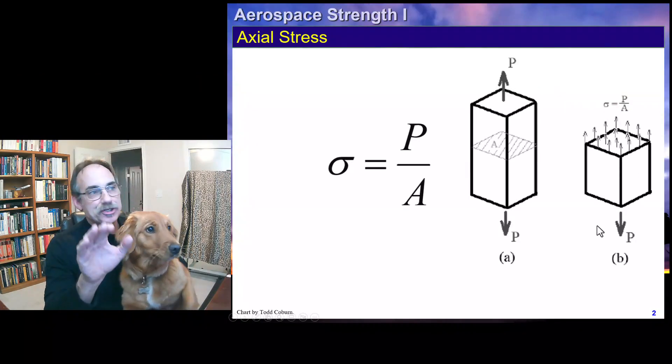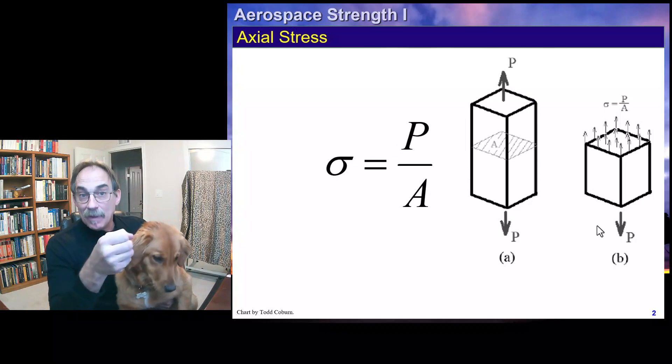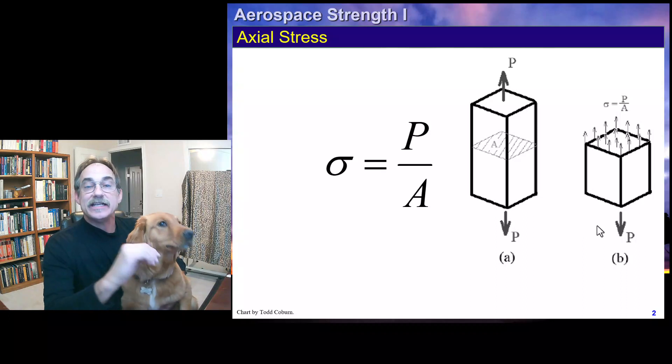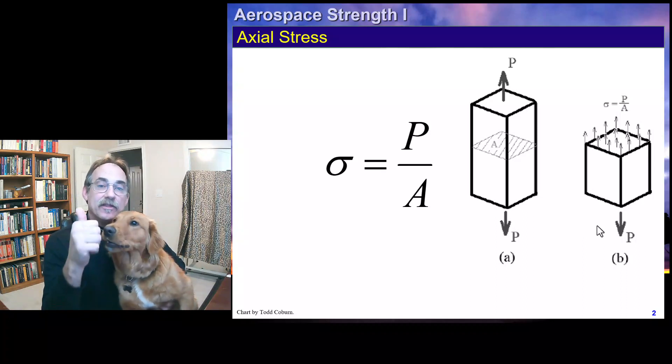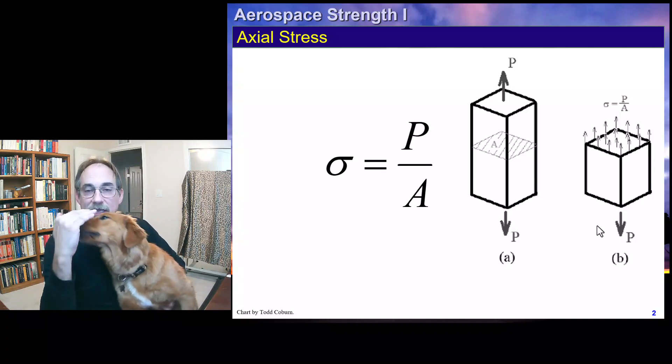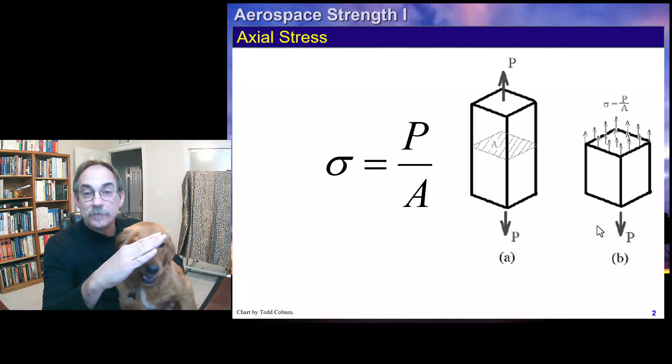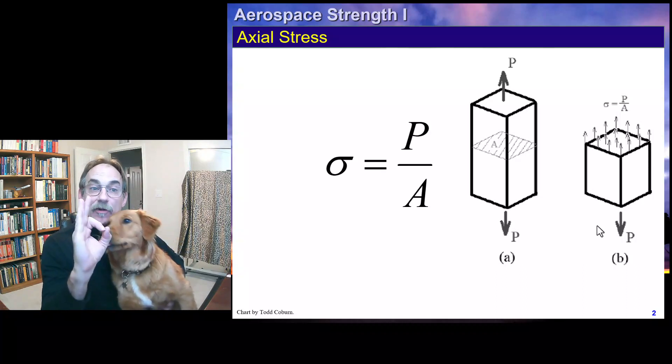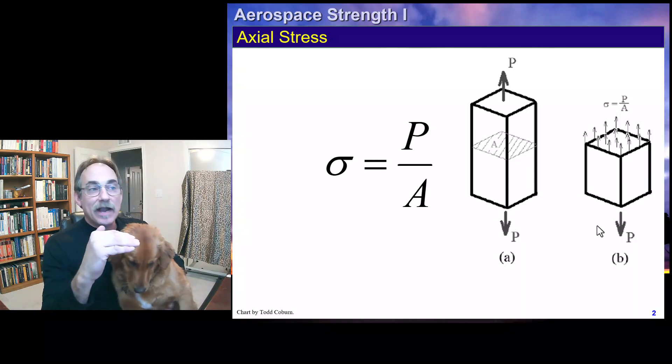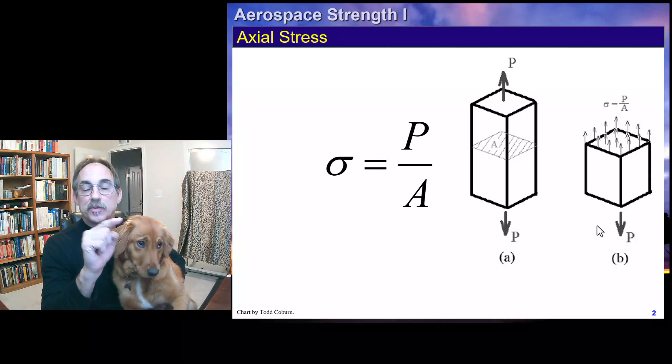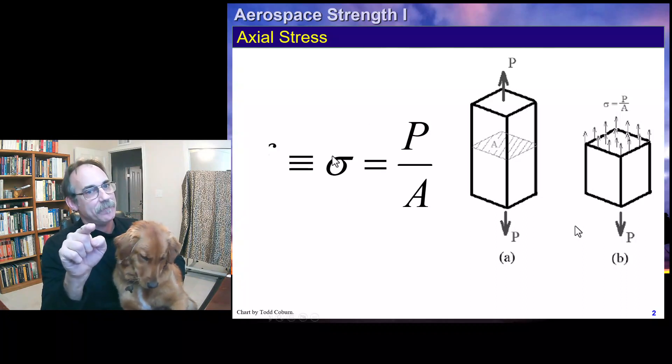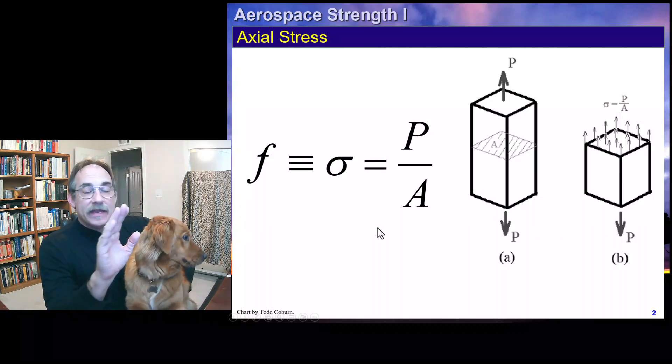The first formula is axial stress. If we have a member subjected to axial load, whether tension or compression, the stress is just P over A. You take a cross-sectional cut that's perpendicular to the force, and that defines the area. If you take P over A, that's the average stress on the cross-section. You should know this one and how to apply it correctly every time.